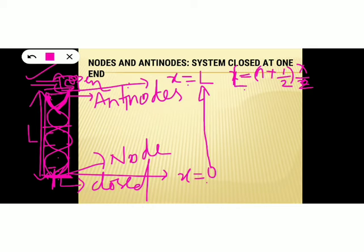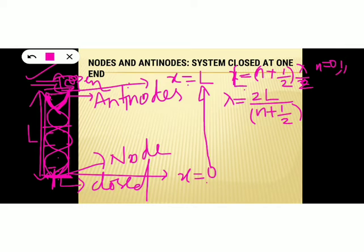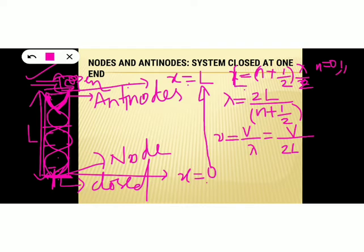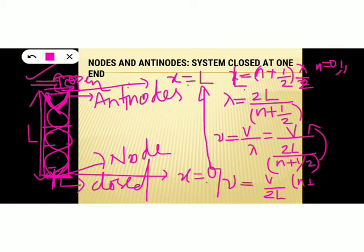Substituting x = L into the antinode condition gives L = (n + 1/2) × λ/2, where n = 0, 1, 2, etc. Solving for wavelength: λ = 2L / (n + 1/2). The frequency is then ν = v/λ = (v / 2L) × (n + 1/2), where n = 0, 1, 2, etc.